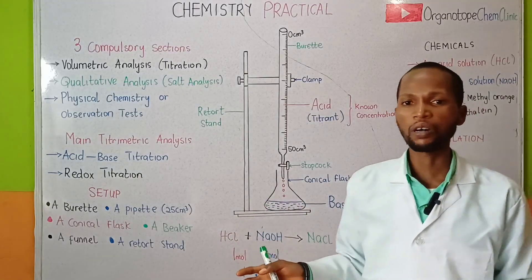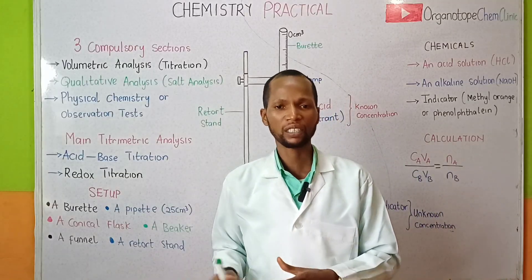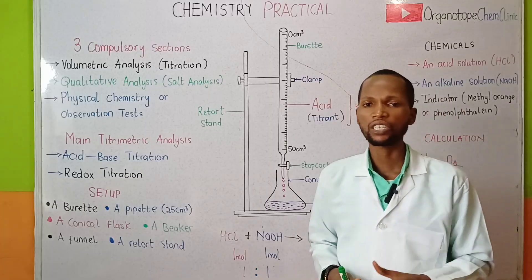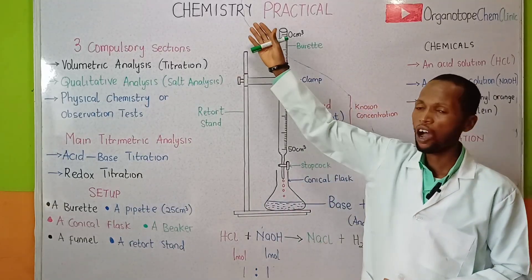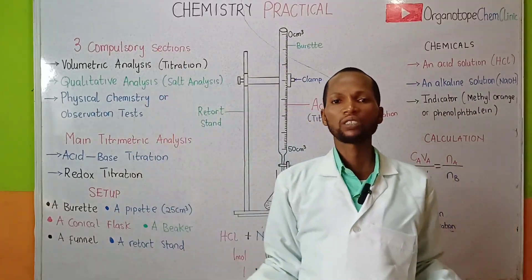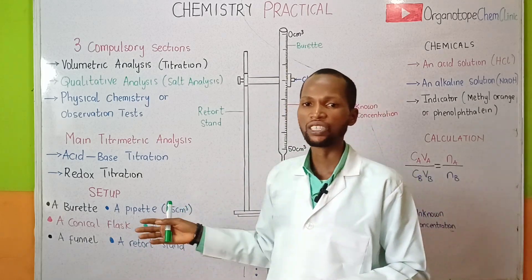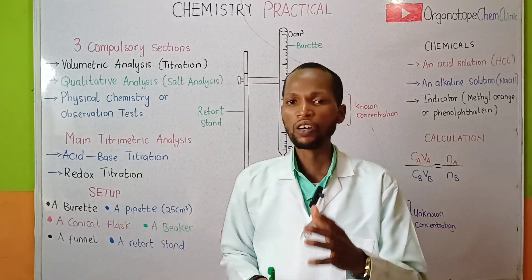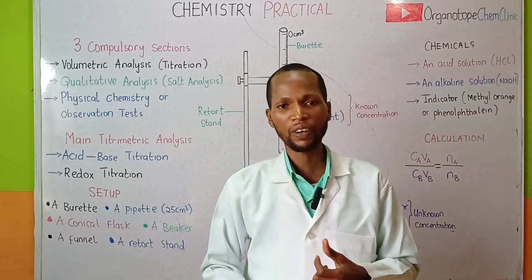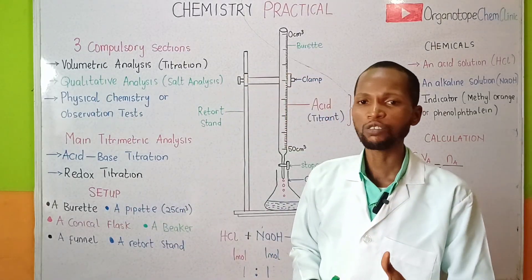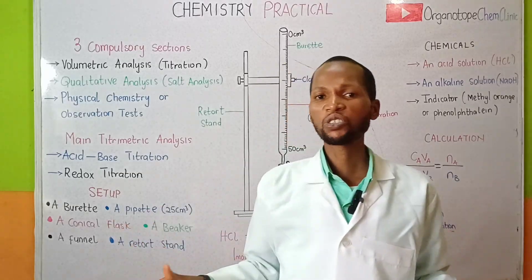Note that for advanced level examinations we cannot simply apply the formula CaVa/CbVb = na/nb — I will show the best approach for advanced level students in my next video lesson. Before proceeding with acid-base titration calculations, every student should watch my video lesson on stoichiometry and mole concepts, covering balancing of chemical equations, mole-to-mole relationships for reactants, and conversion of moles to mass.